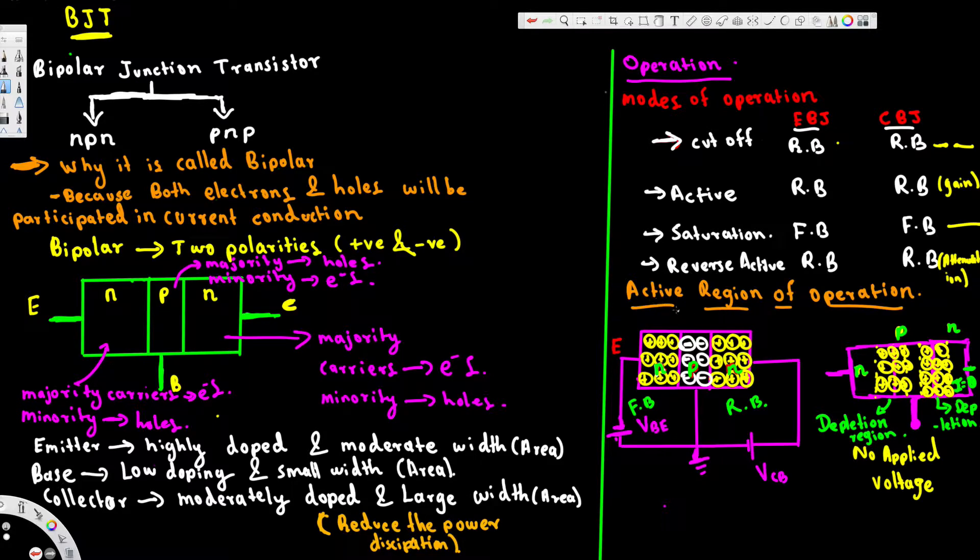Let's look at the active region operation. Here we have positive connected to negative. When positive is connected to negative, that's forward bias. When positive is connected to positive, that's reverse bias.